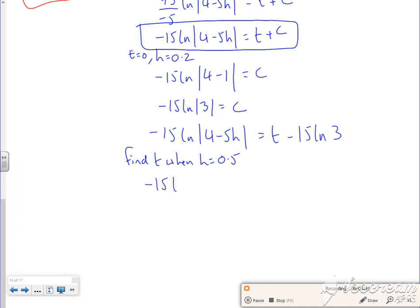So I've got minus 15 log of 4 minus 5 lots of 1 half is T minus 15 log of 3. So I've got 2 and a half, 1 and a half, so that's minus 15 log of 1.5. Then if I add on this bit over here, that's going to be plus 15 ln 3 is equal to T.